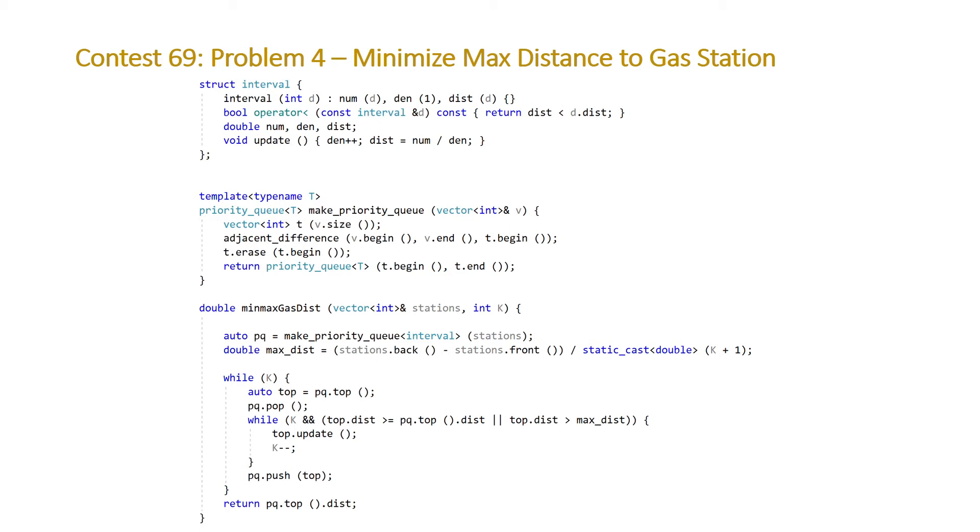We want to divide by one. And we've defined this less than operator in order for us to be able to use the priority queue correctly. So that will make sure that we always can efficiently move the interval with the highest distance, this value, to the top. So let's skip down to the function minMaxGasDist, and the first thing we do here is we construct our priority queue.